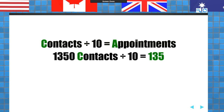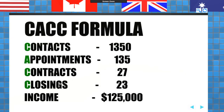If somebody said I'm going to pay you $125,000 to talk to 1,350 people, how many of you would take that job? All of you would, I would guess. You've all had horrible jobs. But the bottom line is, if all I've got to do is dress up, be nice, and talk to 1,350 people to make $125,000, I'll take that job all day. There's your CACC formula — you've got to make 1,350 contacts, which gets you a 10% conversion to appointments, that gets you 27 deals. Four will fall. There's your income of $125,000.